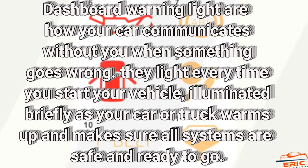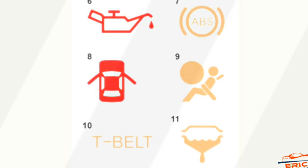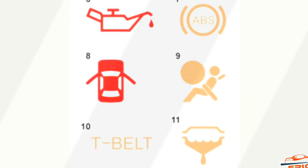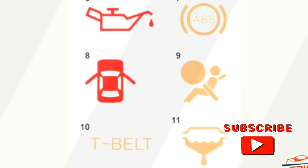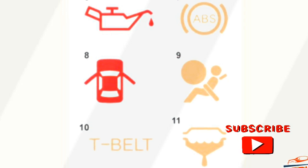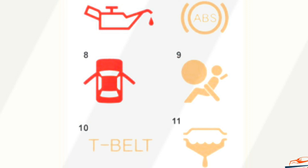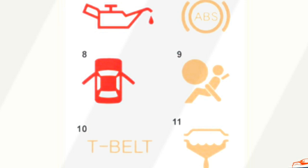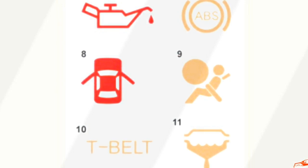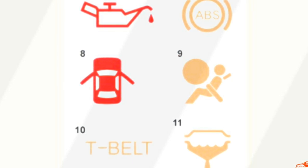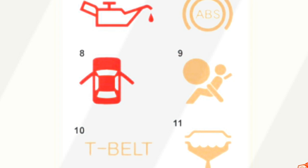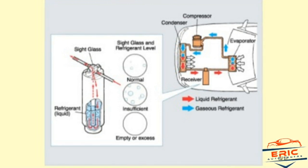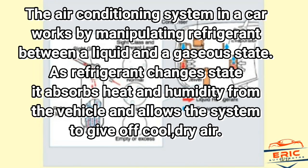We also take a look at air conditioning — how the air conditioning system works, shown in the diagram below. We need to tell you what to do with it and how you can maintain it to keep a cool, dry cooling system on your car. The air conditioning system in a car works by manipulating refrigerant between a liquid and a gas state. The definition below will tell you what to do with it.